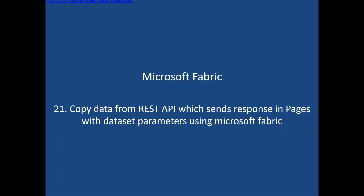Normally, when you have a REST API, you have pages as well. Most REST APIs send the response in pages. If you ask to extract data from page one, it will extract whatever user data you have in page one. If you pass page ID 2, it will extract whatever user data is in page ID 2. So let's understand how to pass this page ID dynamically from the data pipeline.